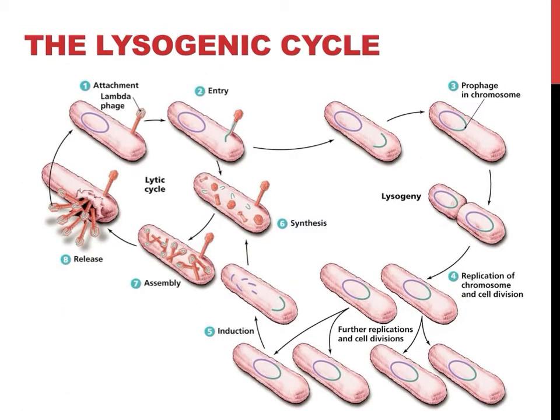Sometimes, instead of or after an all-out attack on your body, viruses choose to sit and wait patiently. The lysogenic cycle is sometimes called the temperate cycle, as viruses aren't immediately causing disease. In this viral cycle, again exhibited on this slide, the virus injects its DNA or RNA into the host cell's genome, where it just lies and waits for an opportunity to strike.